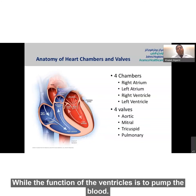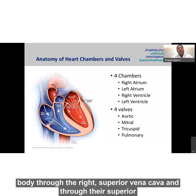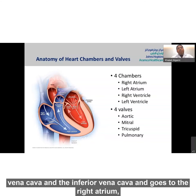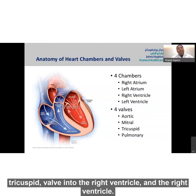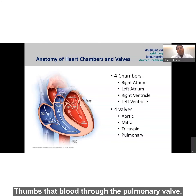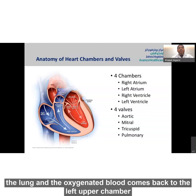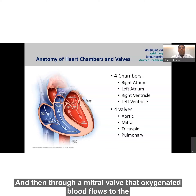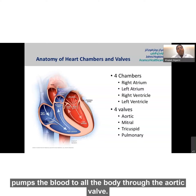The function of the ventricles is to pump the blood. Blood with very low oxygen returns from the body through the superior vena cava and the inferior vena cava and goes to the right atrium. That blood flows through the tricuspid valve into the right ventricle, which pumps it through the pulmonary valve to the pulmonary arteries to go to the lungs. The oxygenated blood comes back to the left atrium, flows through the mitral valve to the left ventricle, which pumps blood to all the body through the aortic valve.